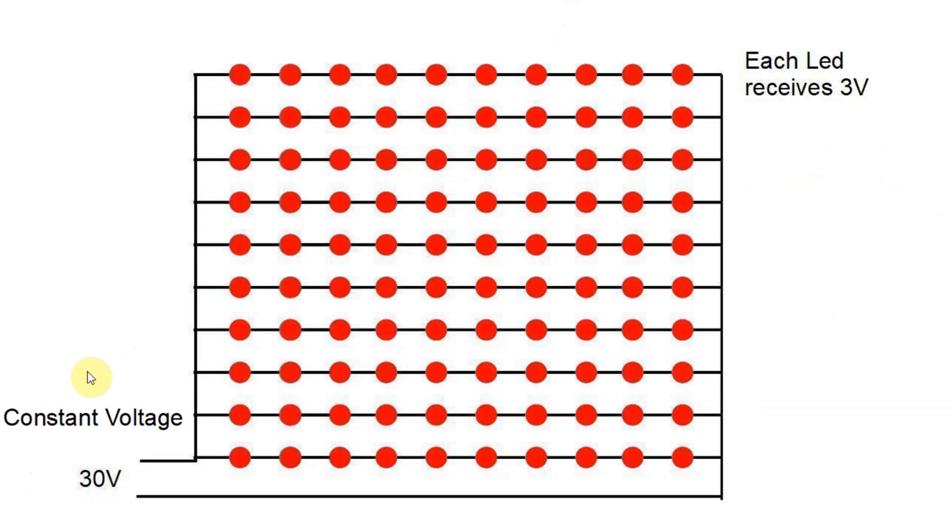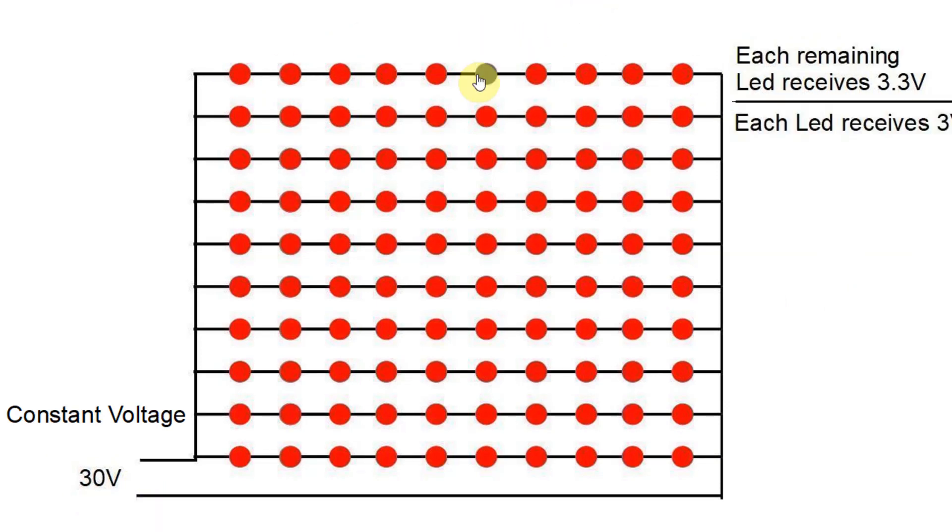Now if we go to a constant voltage power supply, you've got your 30 volts going in and each LED will receive 3 volts. So they're happy. You get a fault, the remaining LEDs here get 3.3 volts, and these LEDs, the remaining LEDs down here, will still be getting their 3 volts. That'll lead that row to blow out.